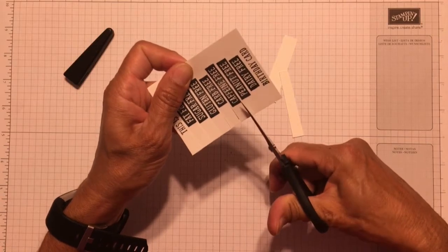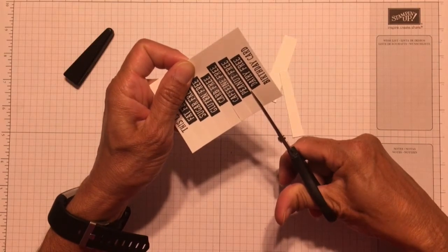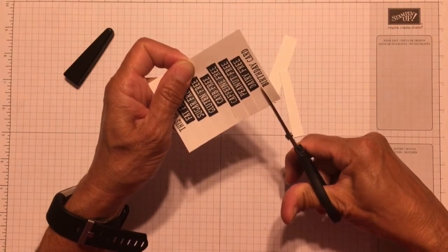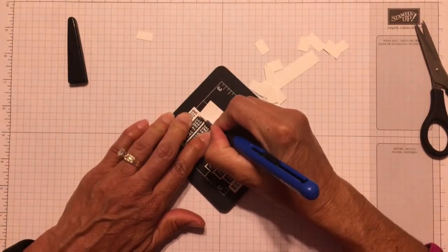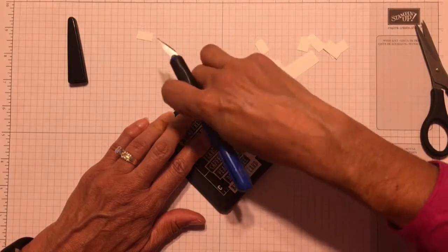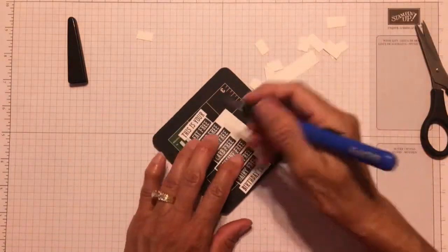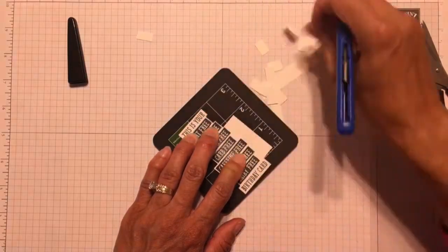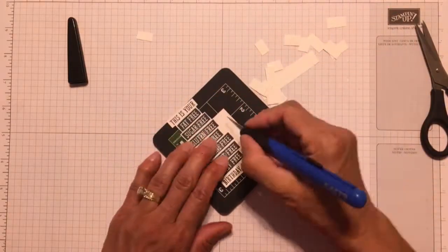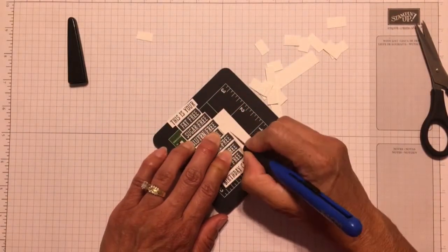I decided to go ahead and cut out the sentiment before I put all the different colors on it. And I used a combination of scissors and a craft knife. If you're a great fussy cutter, you could just use the scissors for the whole thing. Or you could actually use the craft knife for the whole thing. But I decided to make parallel cuts in between the words with the scissors. And then use a craft knife and a mat to cut in between those lines.